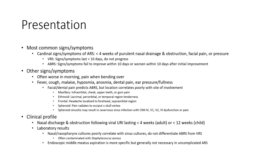Location correlates only with the sinus involved. Clinical profile: nasal discharge and obstruction more common in viral cases. Upper respiratory infection lasting less than 4 weeks, or less than 12 weeks, in a child. Laboratory results: nasopharyngeal culture does not fully correlate with sinus culture and does not differentiate actual bacterial rhinosinusitis from viral. Often contaminated with Staphylococcus. Endoscopic meatal culture is more specific, but generally not obtained in uncomplicated acute rhinosinusitis.